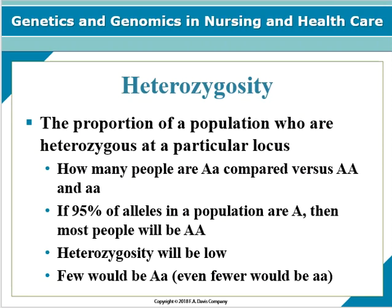Heterozygosity refers to the proportion of a population who are heterozygous at a particular locus — how many people are heterozygous dominant compared to homozygous dominant compared to homozygous recessive. So if 95% of alleles in a population are dominant, then most people will be homozygous dominant and heterozygosity will be low, with even fewer being homozygous recessive — causing that dominant trait to perpetuate in the population.